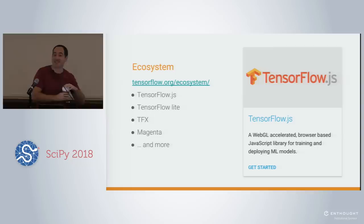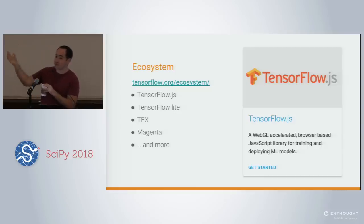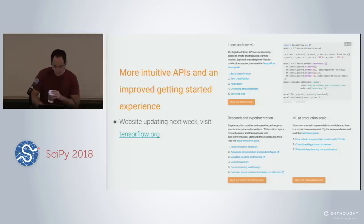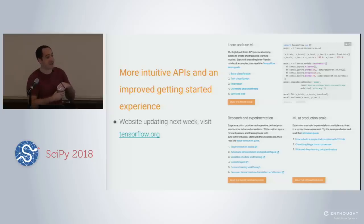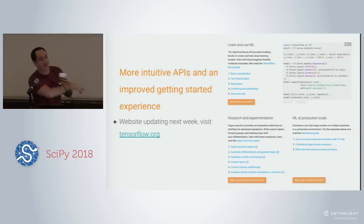TensorFlow is not just a Python API for training and serving models — there's a giant collection of projects, everything from putting code into production. The open source code is exactly what we use internally at Google, which is one of the reasons why it's a giant code base. What we're focusing on today is making all this easier to use. Early next week we're updating the TensorFlow Getting Started page with more beginner-friendly exercises for the different APIs.